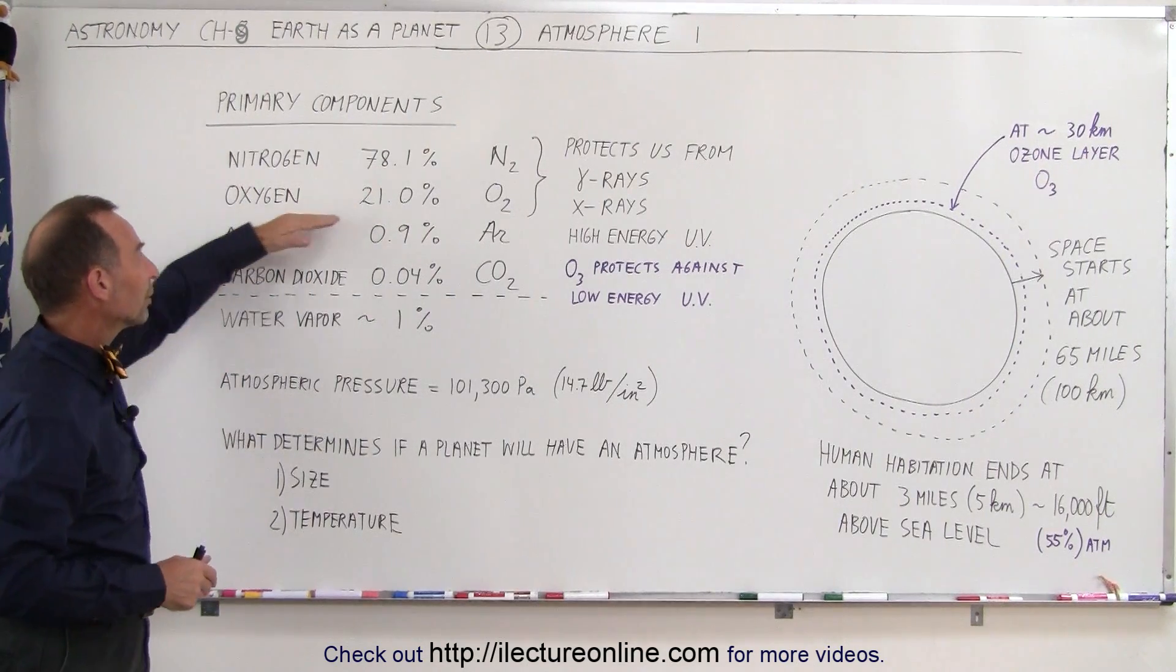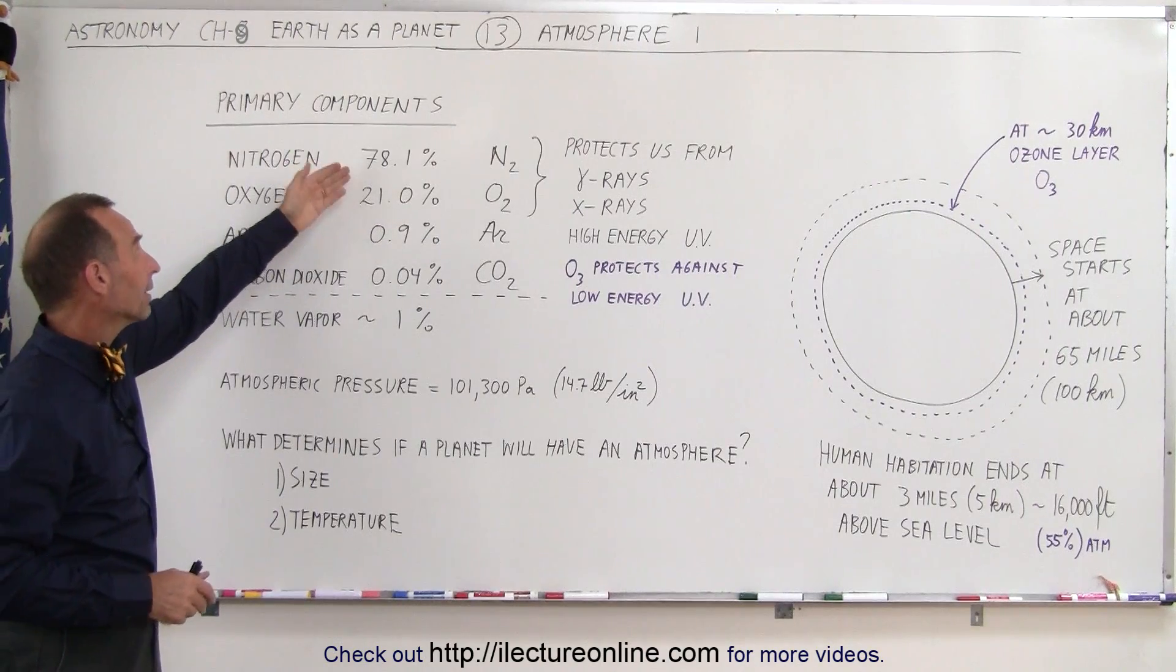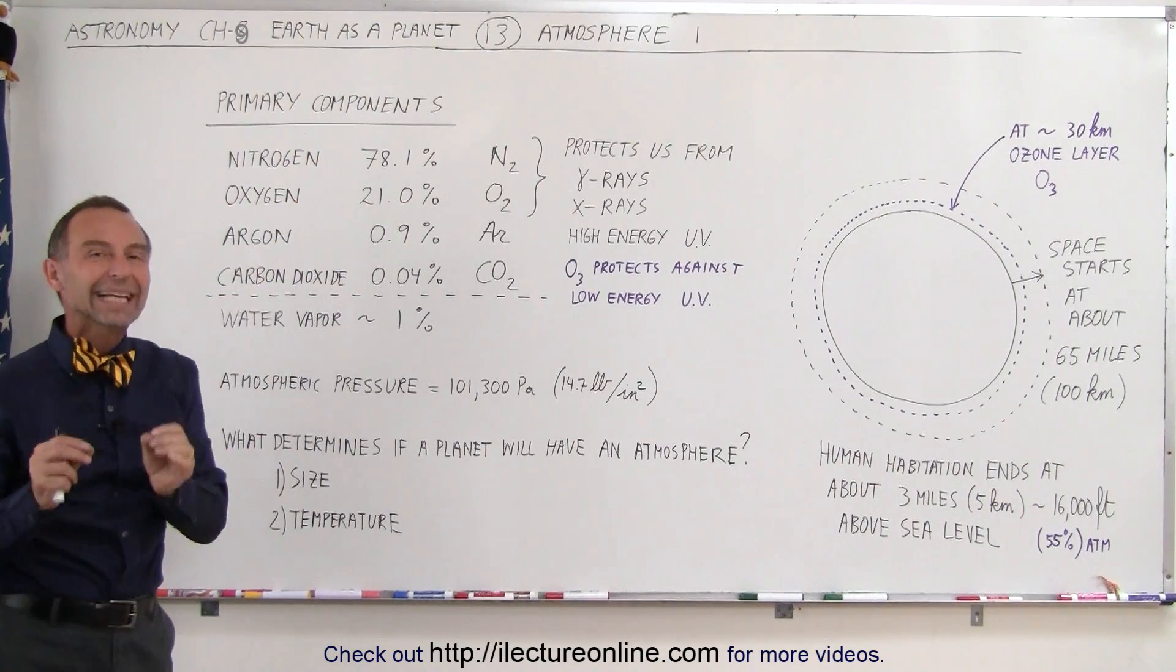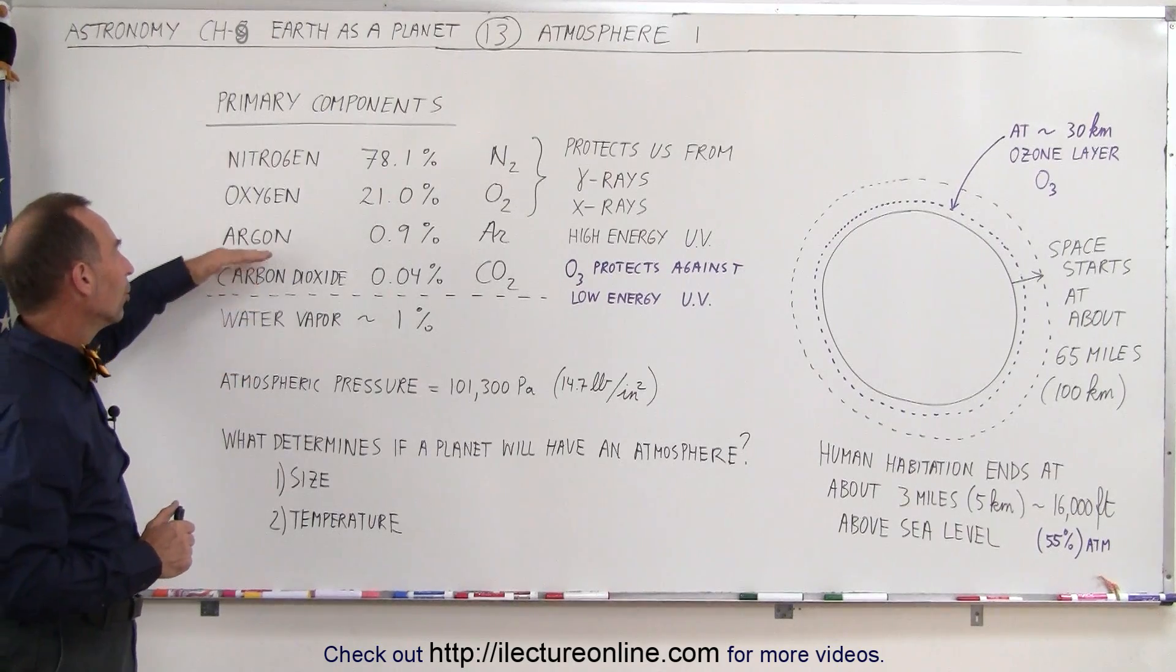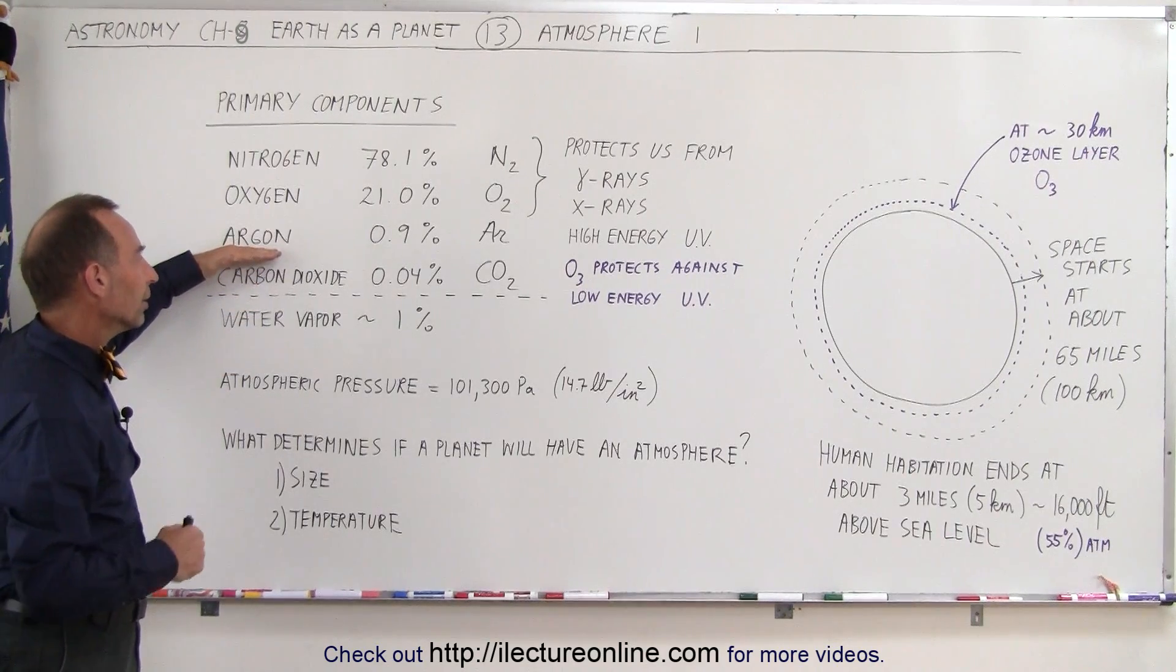Oxygen is number two at 21%, so combined, nitrogen and oxygen make up 99% of our atmosphere. Almost an entire percent also goes to argon.